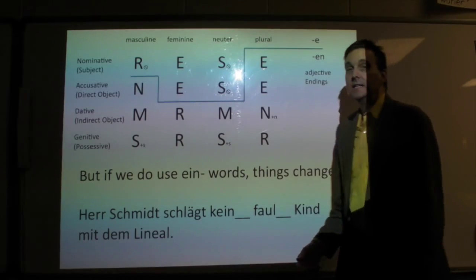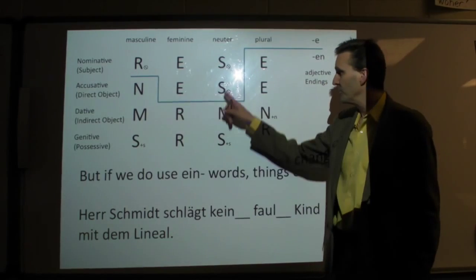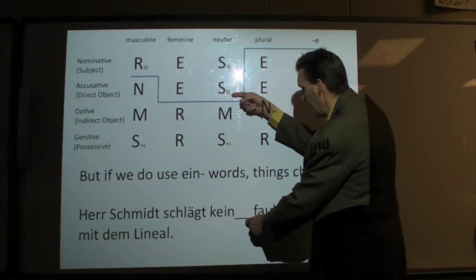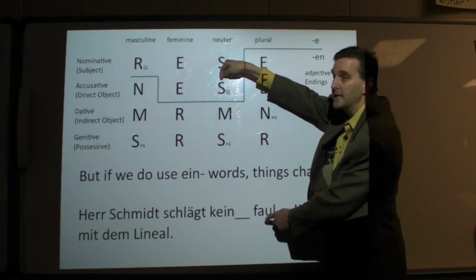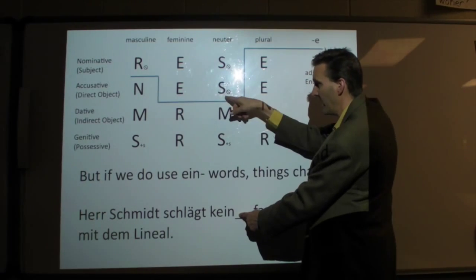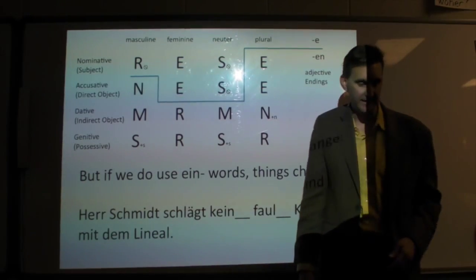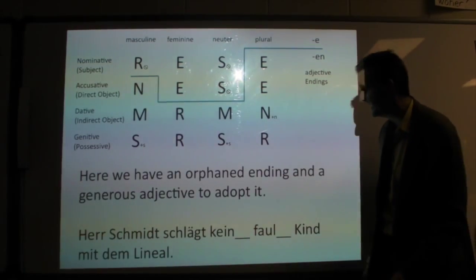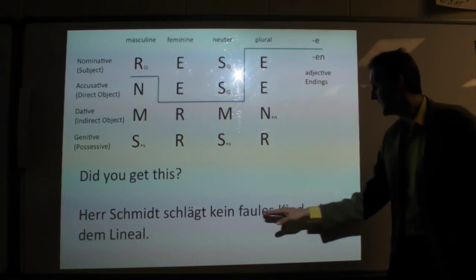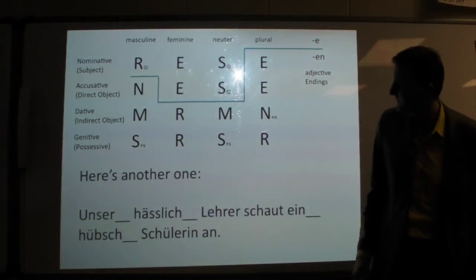But, if I now put a word that will orphan its endings, like kein, we're still here, but kein now does orphan that S. So, now faul is desperate to adopt that S. So, we have kein with no ending, and then faules. Kein faules. We've now adopted that ending, and here's what it will look like. Herr Schmidt schlägt kein faules Kind mit dem Lineal. A much nicer sentence.